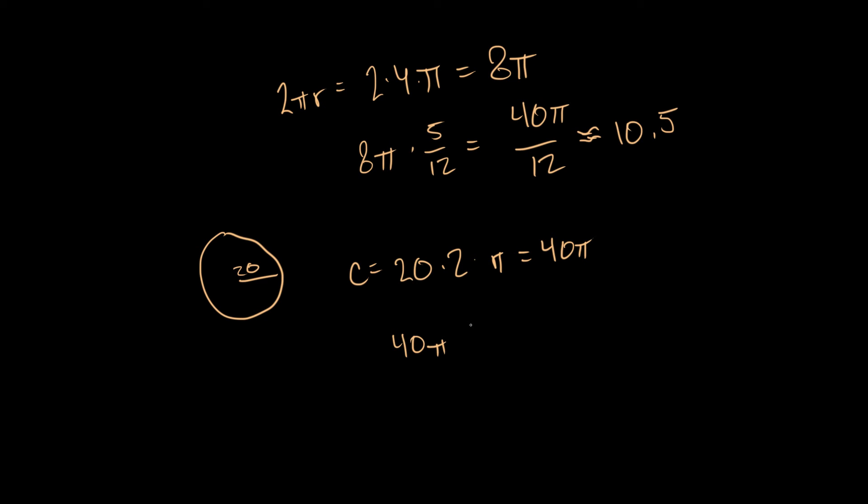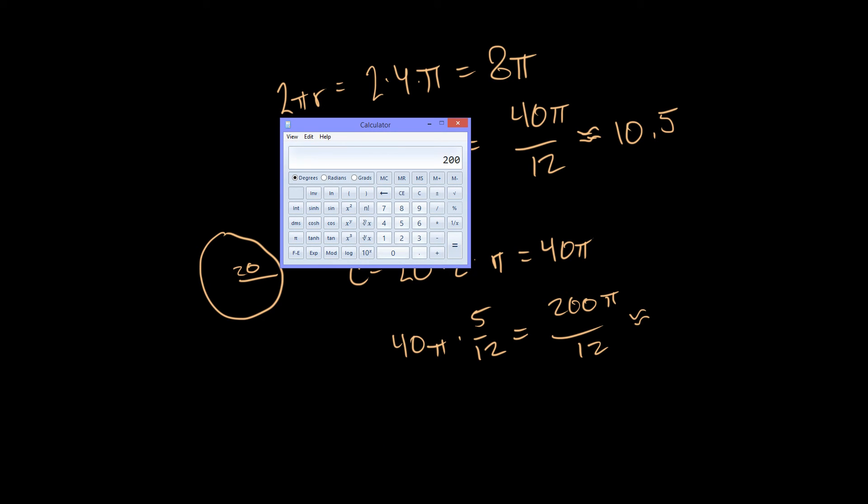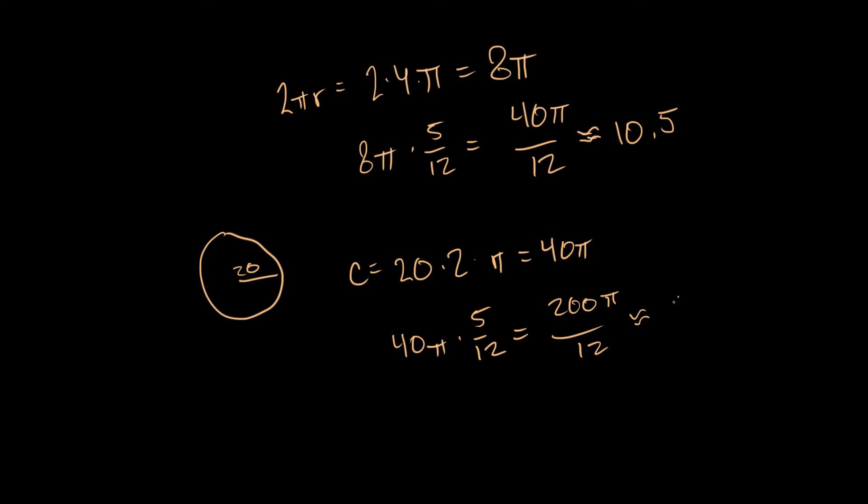And we're going to find 5/12 of that. So 40π times 5/12 gives us 200π over 12. And once again we're going to approximate that. It's going to be 200 times 3.14 divided by 12. That's going to be 52.3. Awesome.